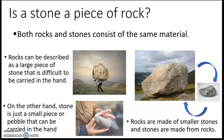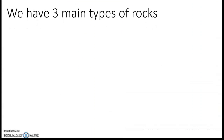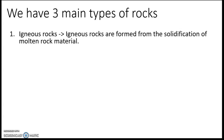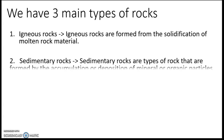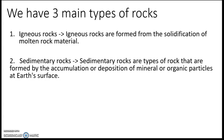All right, we have three main types of rocks. What are those? The first one is igneous rock. Igneous rocks are formed from the solidification of molten rock materials. Number two, sedimentary rocks — sedimentary rocks are types of rock that are formed by the accumulation or deposition of mineral or organic particles.